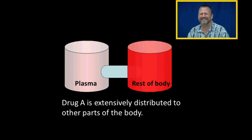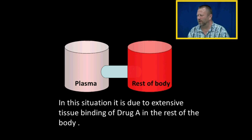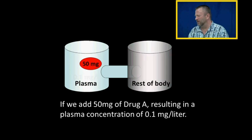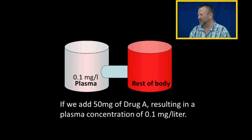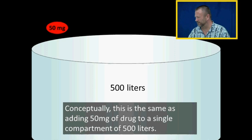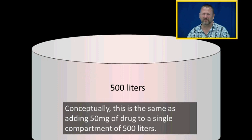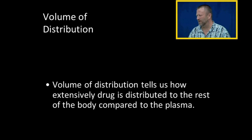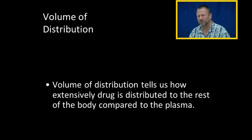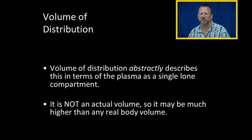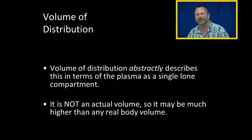That means drug A is extensively distributed to other parts of the body — in this case due to extensive tissue binding. Conceptually, adding 50 milligrams of drug A and resulting in a plasma concentration of 0.1 milligrams per liter is the same as adding 50 milligrams to a single compartment of 500 liters. The volume of distribution abstractly describes distribution using the plasma as a single lone reference compartment; it is not an actual volume and may be much higher than any real body volume.